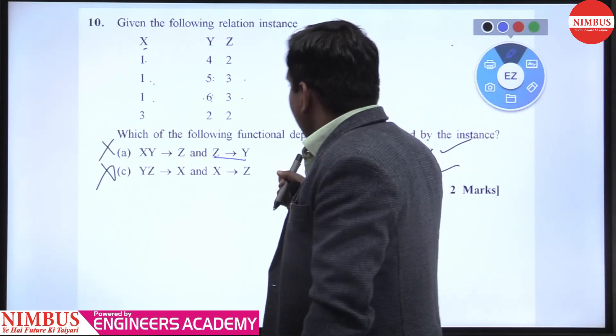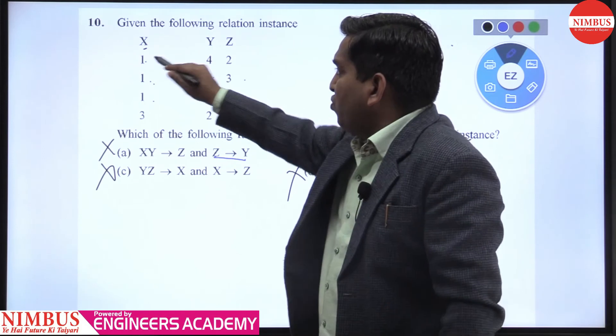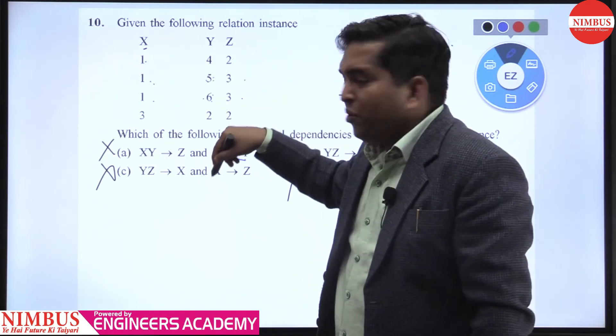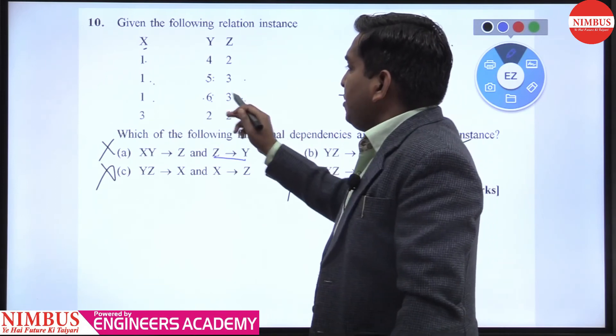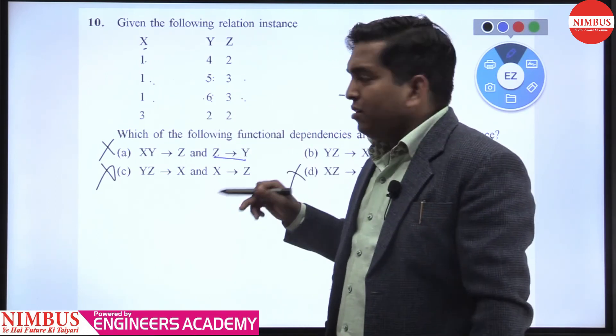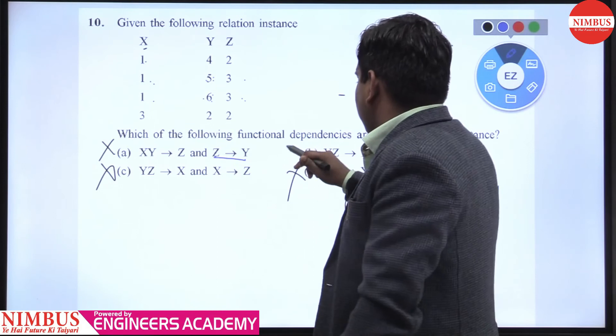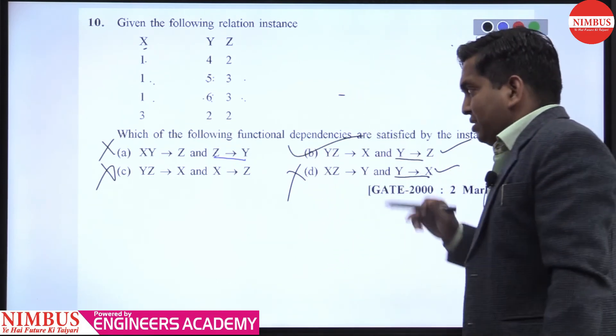YZ→X: 4,2 gives 1. 4,2 repeated? No. 5,3 gives 1. 5,3 repeated? No. 6,3 gives 1. 6,3 repeated? No. 2,2 gives 3. Yes! This is the FD which is satisfied by this following instance.